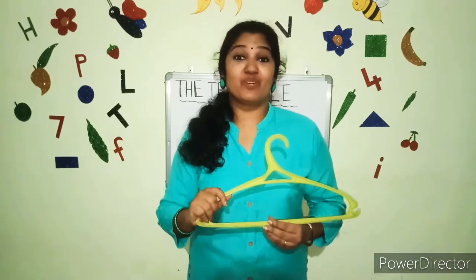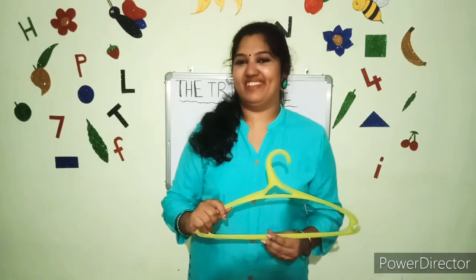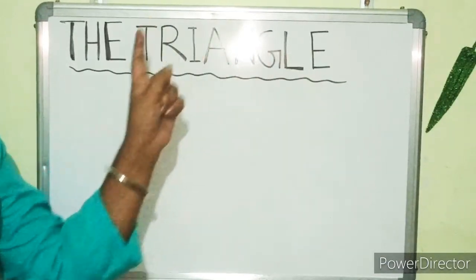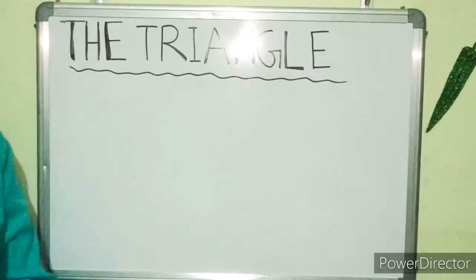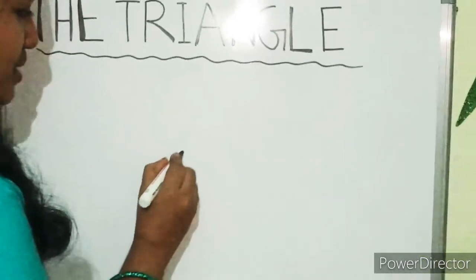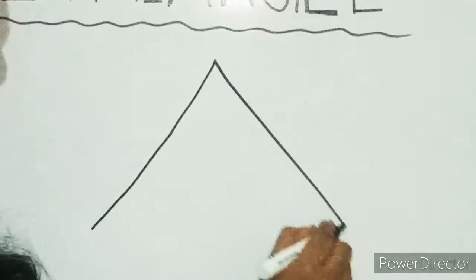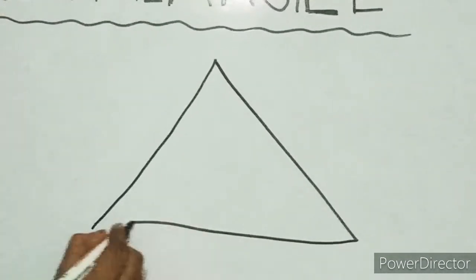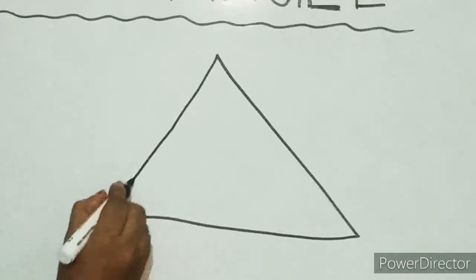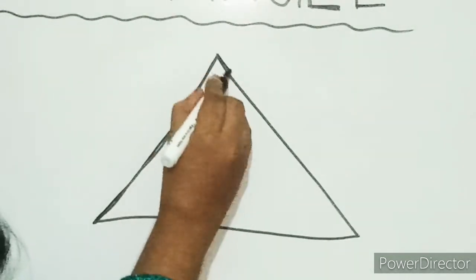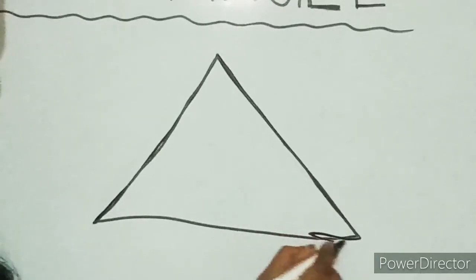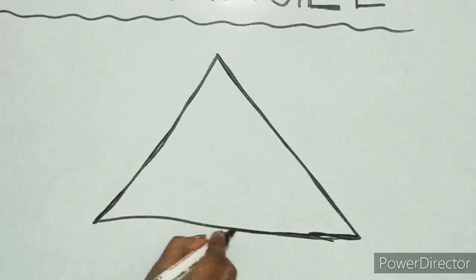Now I'm going to show you how to draw a triangle. It's very easy to draw a triangle. Up the mountain, down and back — that makes a triangle. One more time: up the mountain, down and back.